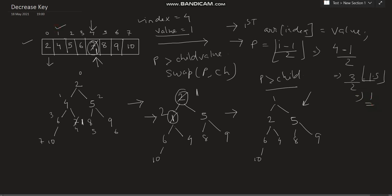So index 1 is the parent of index 4. In the tree diagram we confirm that index 1 is the parent of index 4. We compare the parent's value at index 1 with the child value: 4 is greater than 1. Since the parent's value is greater than the child value, we swap the values. Now 1 is at index 1 and 4 is at index 4.